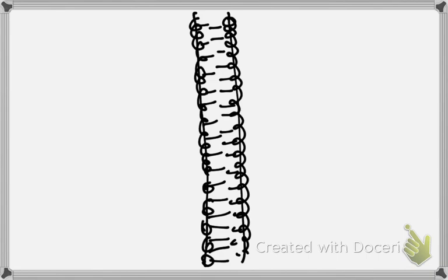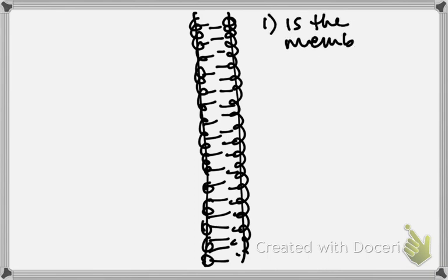There are two things you have to ask when you're trying to look at something and say 'can it cross a cell membrane?' Number one: is the membrane a barrier to this thing?